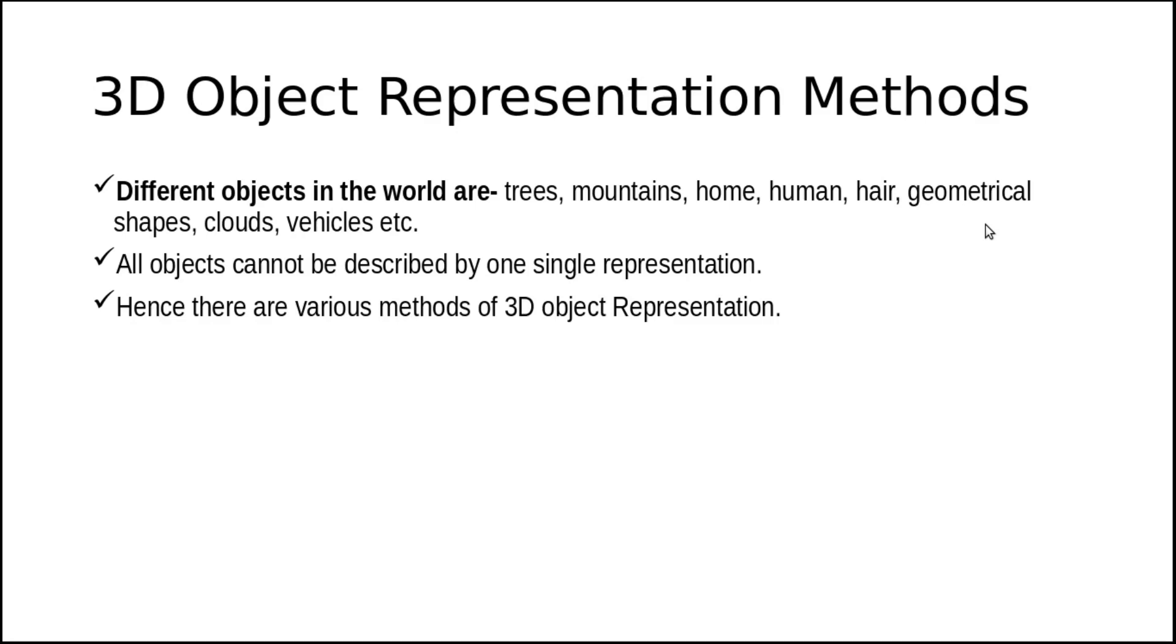We know that there are different objects in the world: trees, mountains, homes, human hair, geometrical shapes, clouds, vehicles, etc. All the objects cannot be described by one single representation. So to represent those objects, we want various methods. That is called 3D object representation methods.